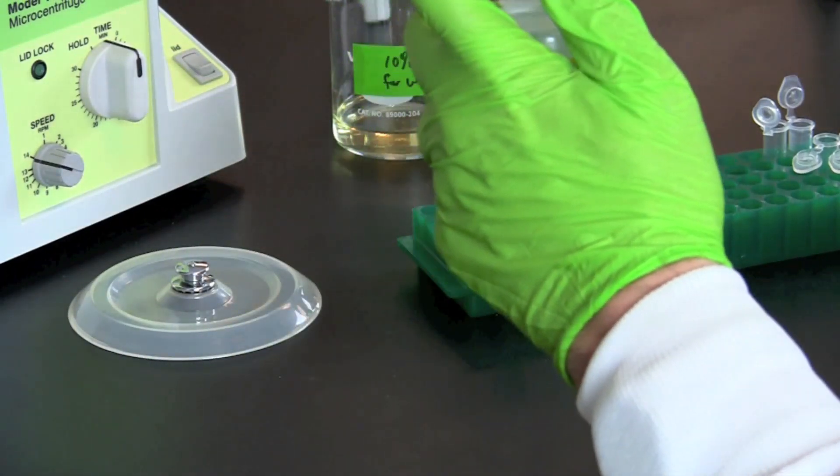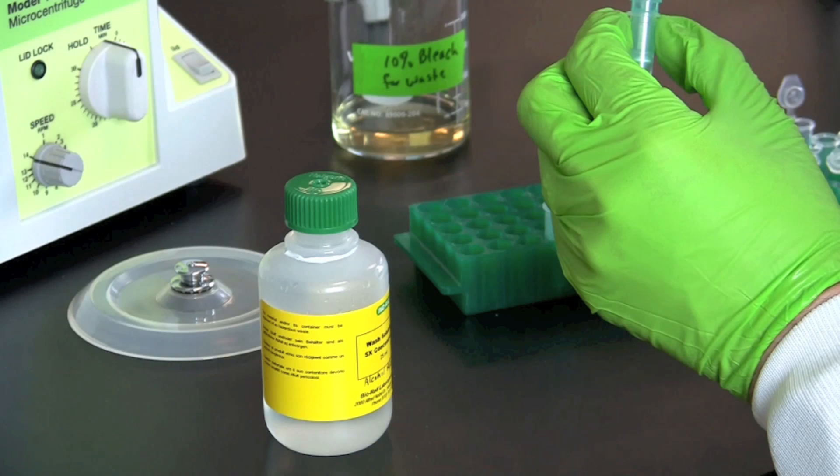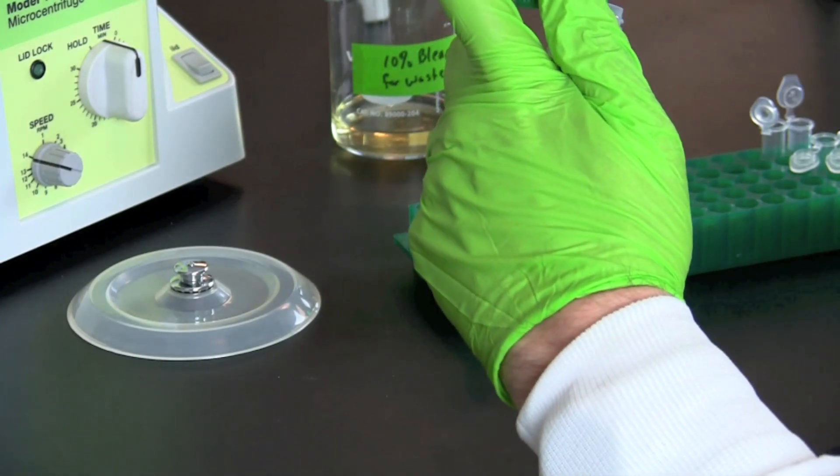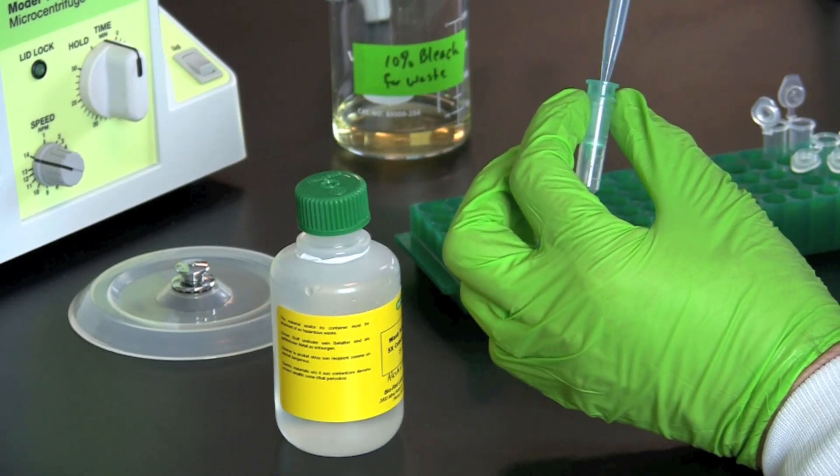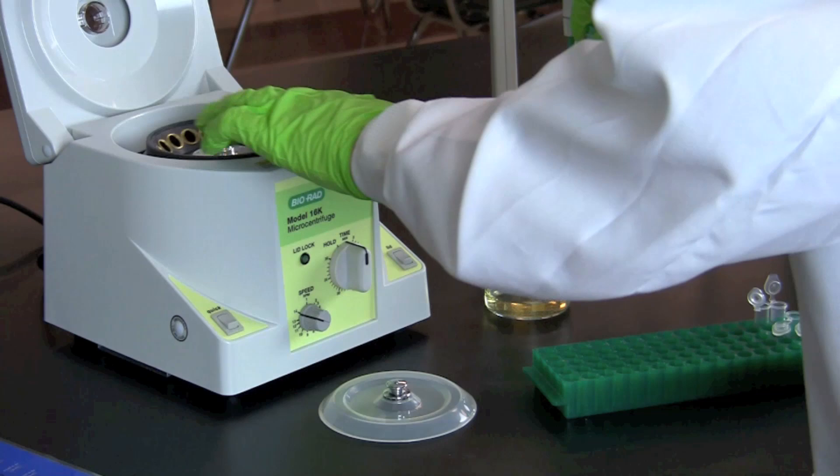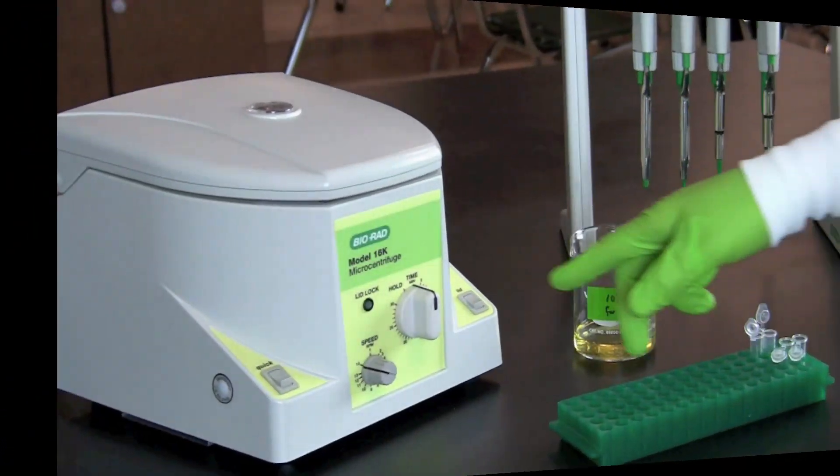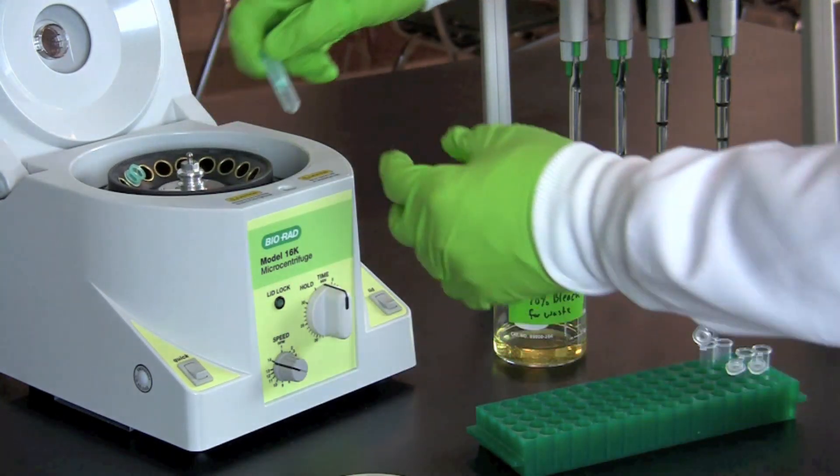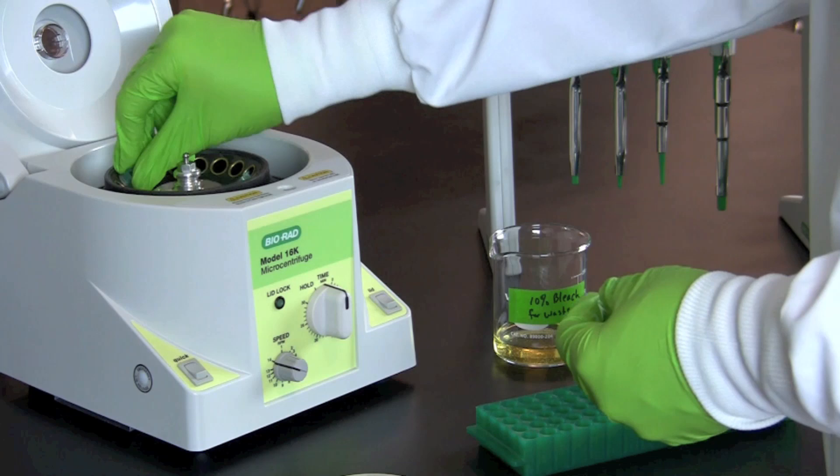Pipet 750 microliters of wash solution into each column. Place both columns into a microcentrifuge in a balanced pattern. Spin the columns in the capless collection tubes for one minute at top speed. Discard the flow through from each collection tube. Place the columns back into the collection tubes and spin for one minute to dry out the columns.